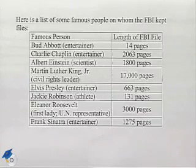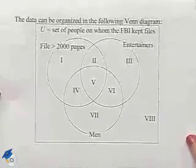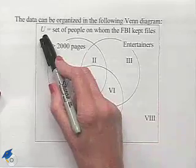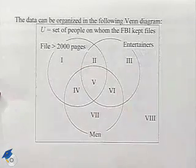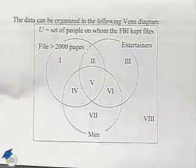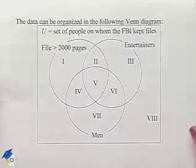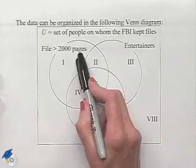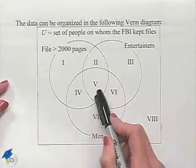Now the data can be organized in the following Venn diagram. The universal set U is equal to the set of people on whom the FBI kept files, and we notice that we have three different sets designated. We have files that were greater than 2,000 pages, and that includes regions one, two, four, and five.